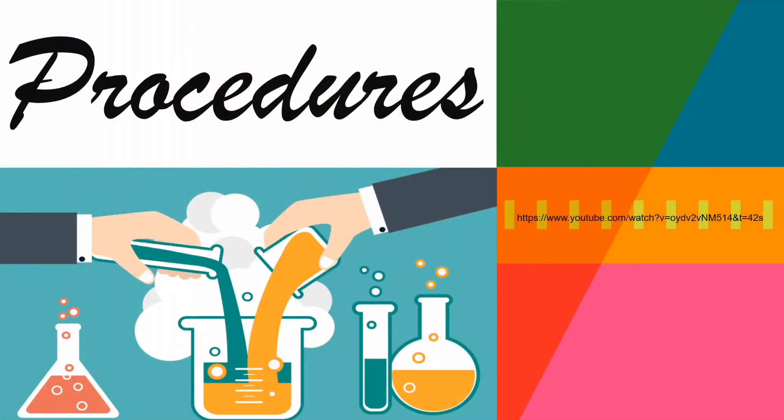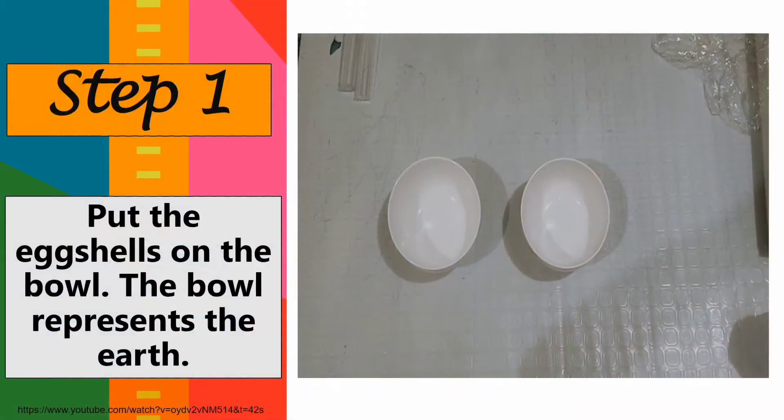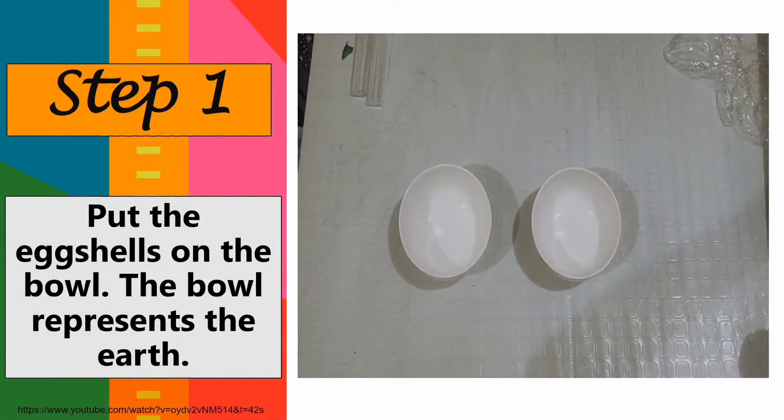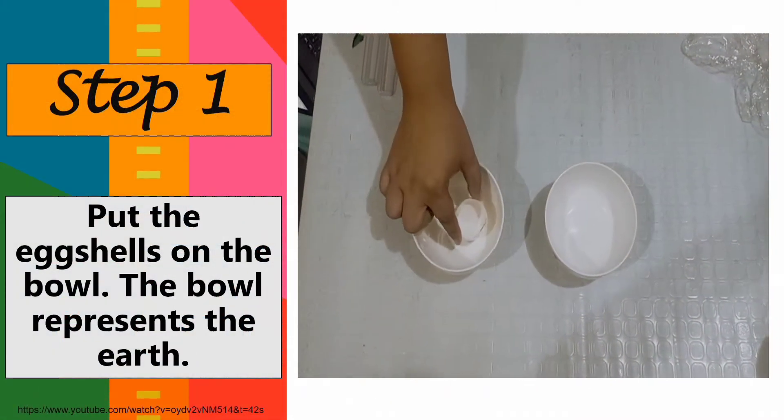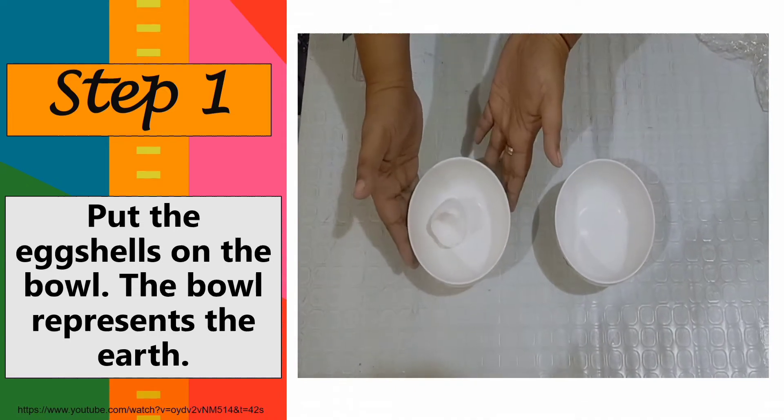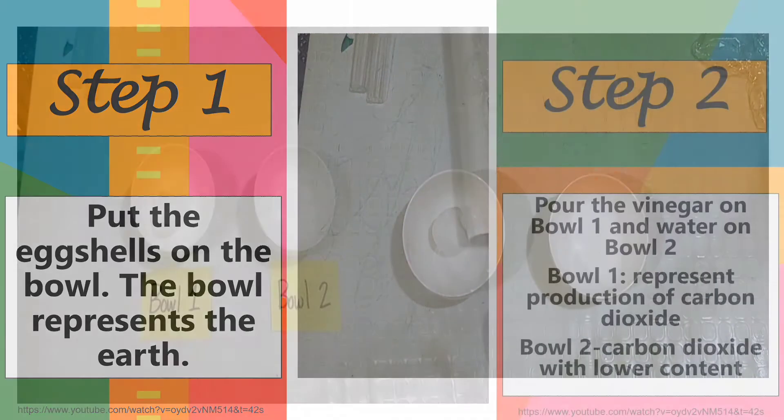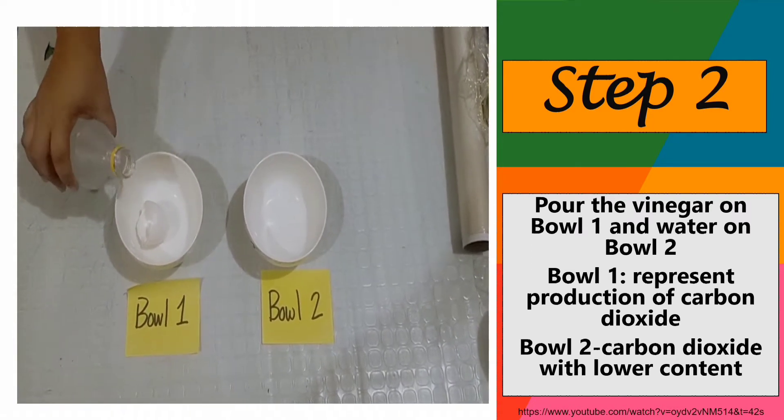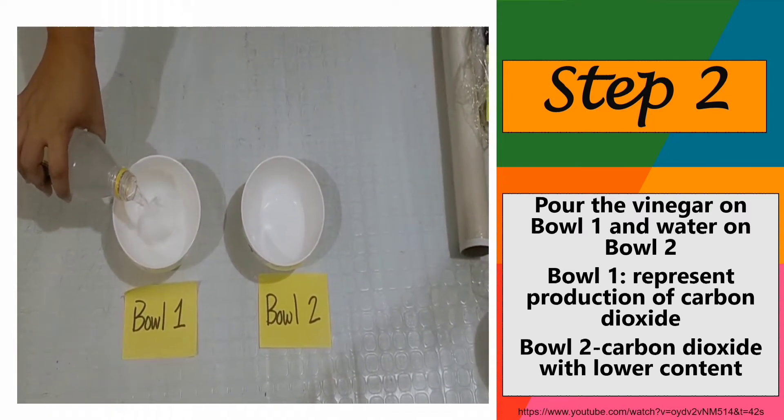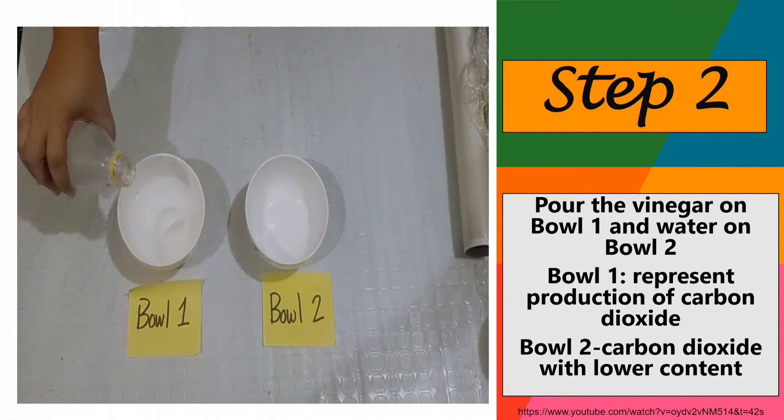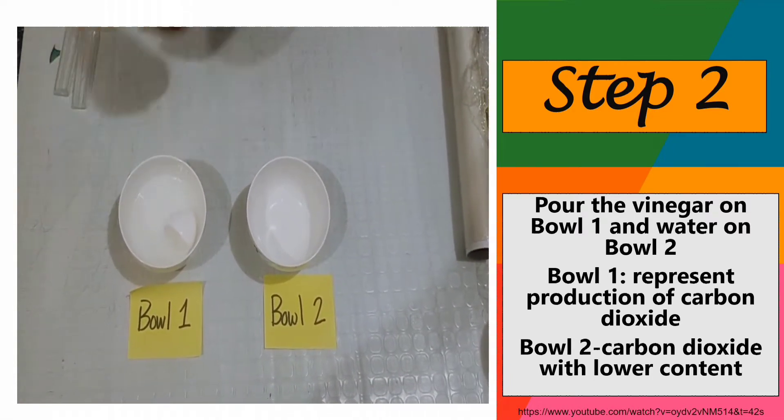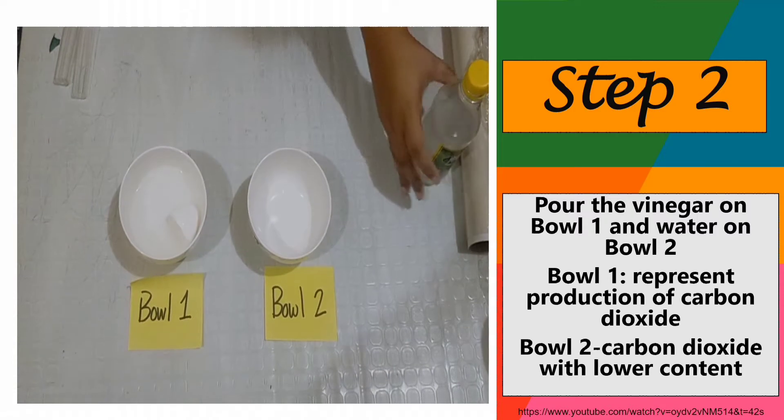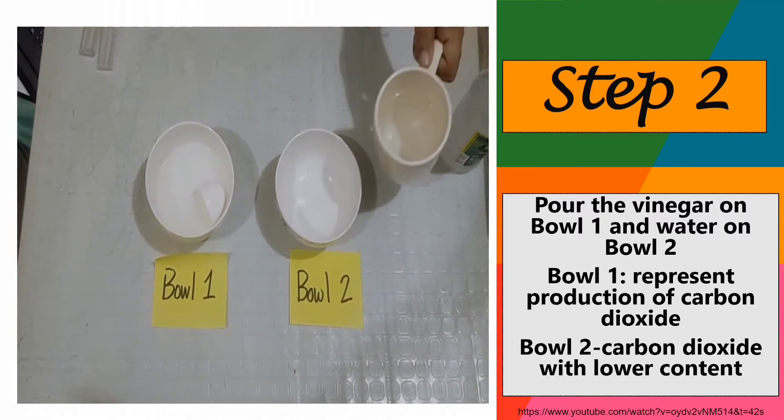Procedures. Step 1: Put the eggshells on the bowl. The bowl represents the Earth. Step 2: Pour the vinegar on bowl 1 and the tap water for bowl 2.